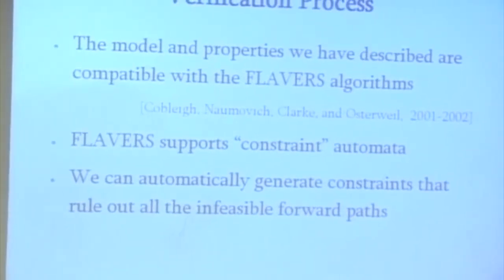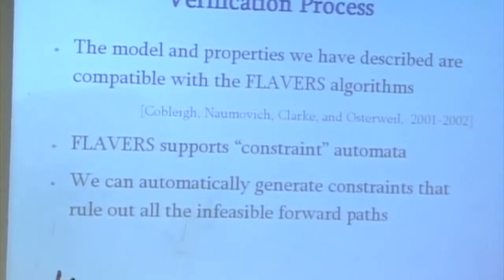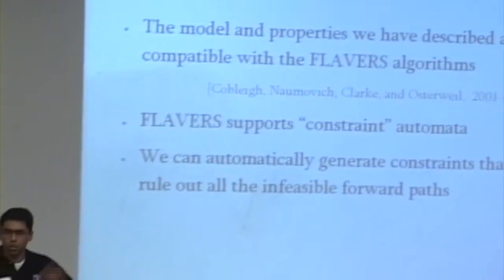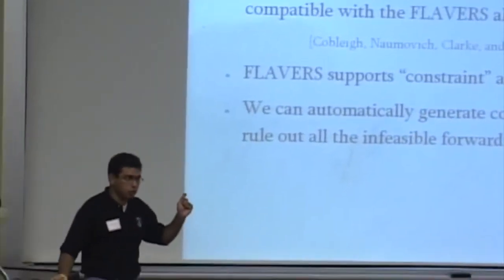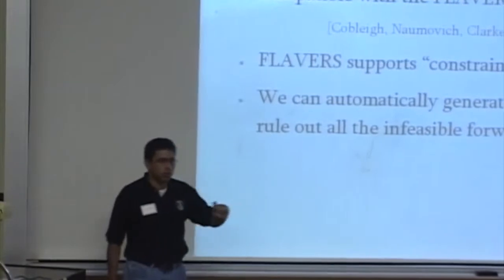These constraint automata basically say that a path is feasible until the constraint automaton goes off. And it says at that point, this path is no longer feasible. You can now get rid of it from reporting any errors. So, we essentially stole this algorithm from Flavers.